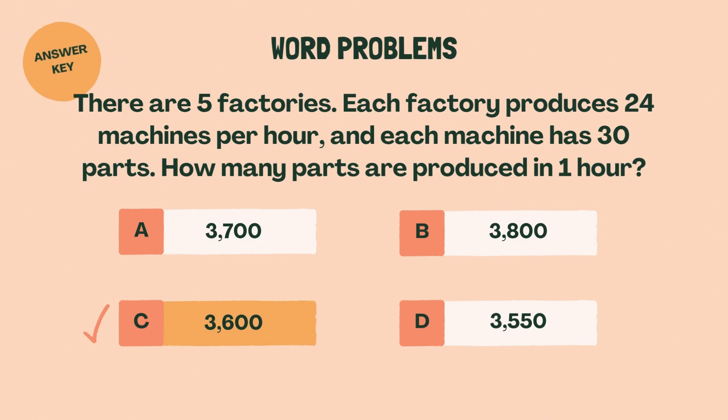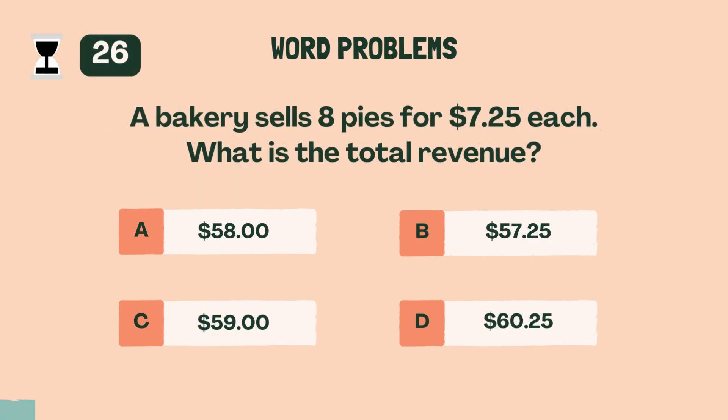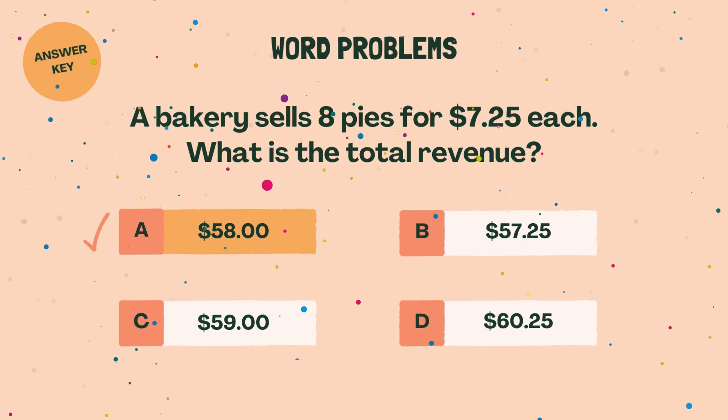A bakery sells eight pies for $7.25 each. What is the total revenue? A, $58.